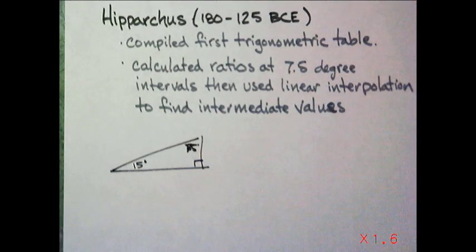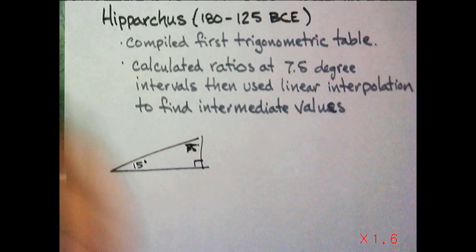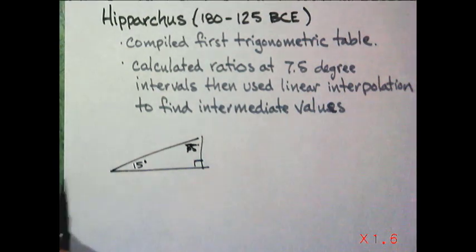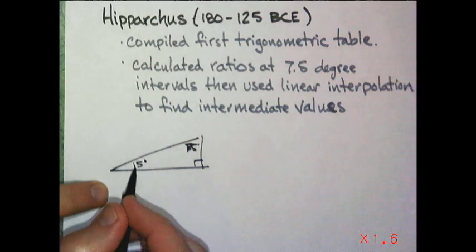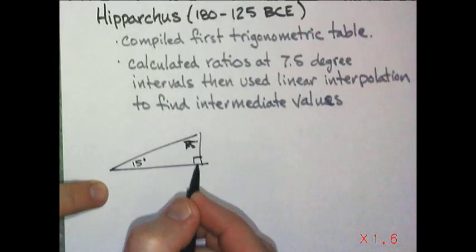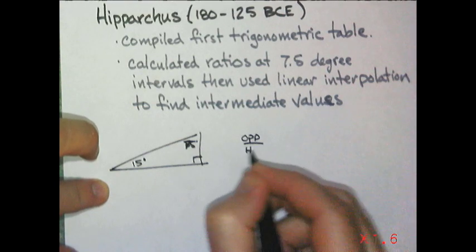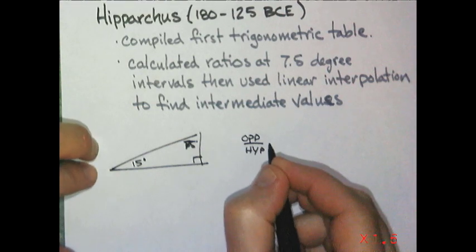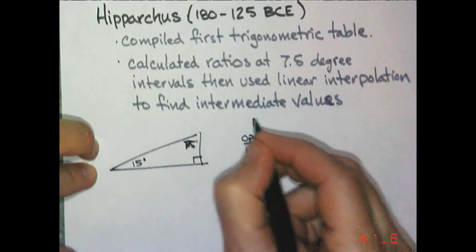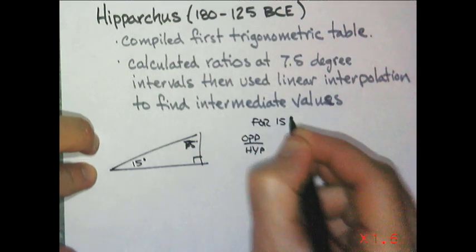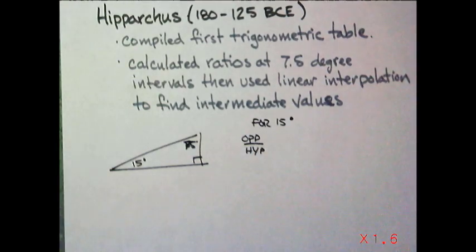He would write down in his book what the ratio was in a 15, 75, 90 degree triangle, the ratio of opposite compared to hypotenuse. So, we could use that for 15 degrees. We could use that to build or make, construct, whatever, a new triangle or solve for things like that.